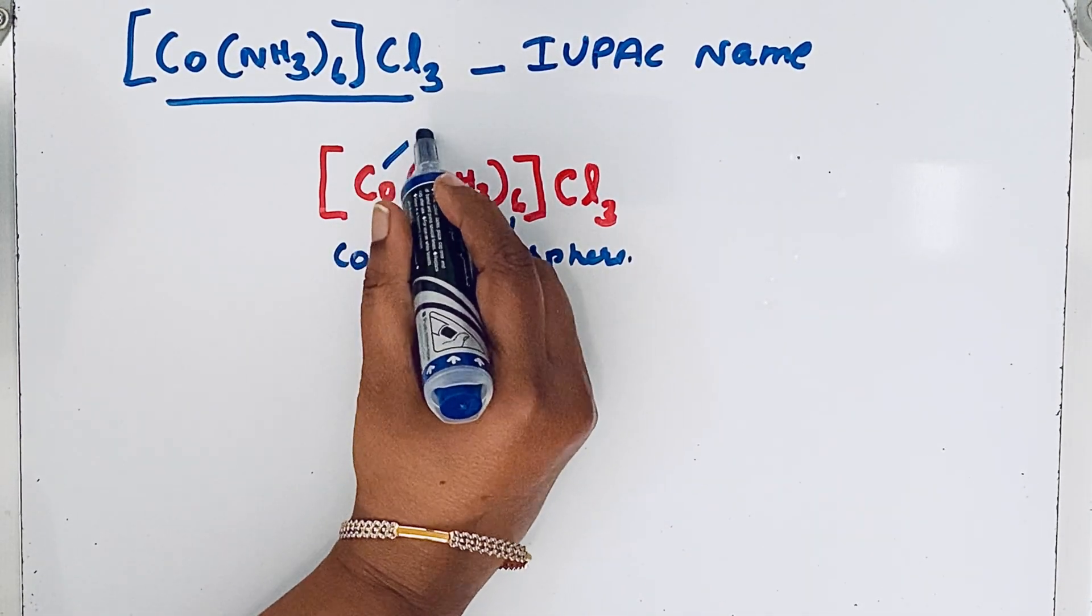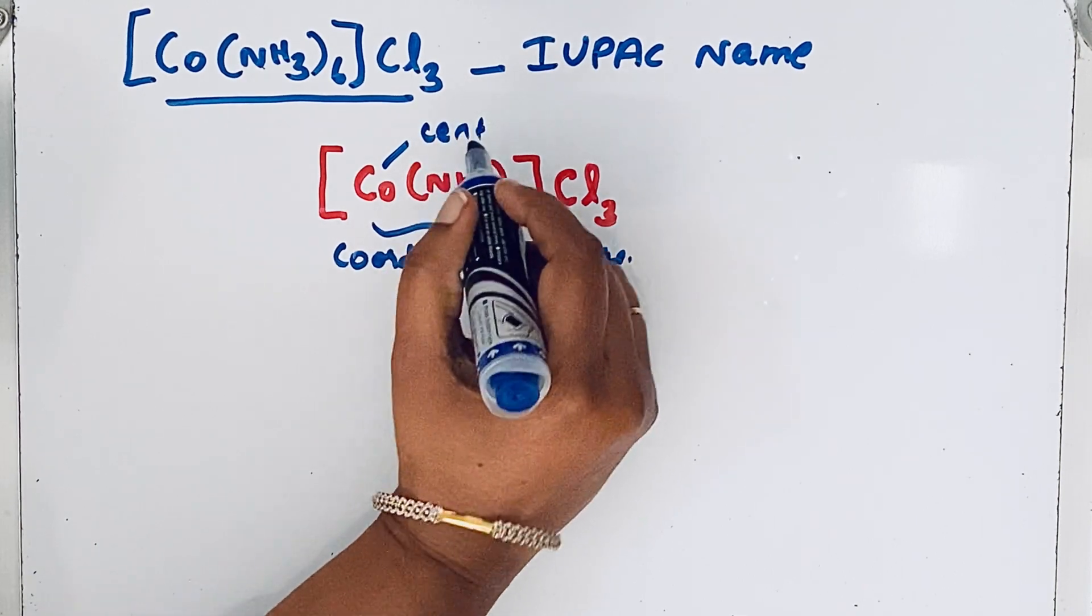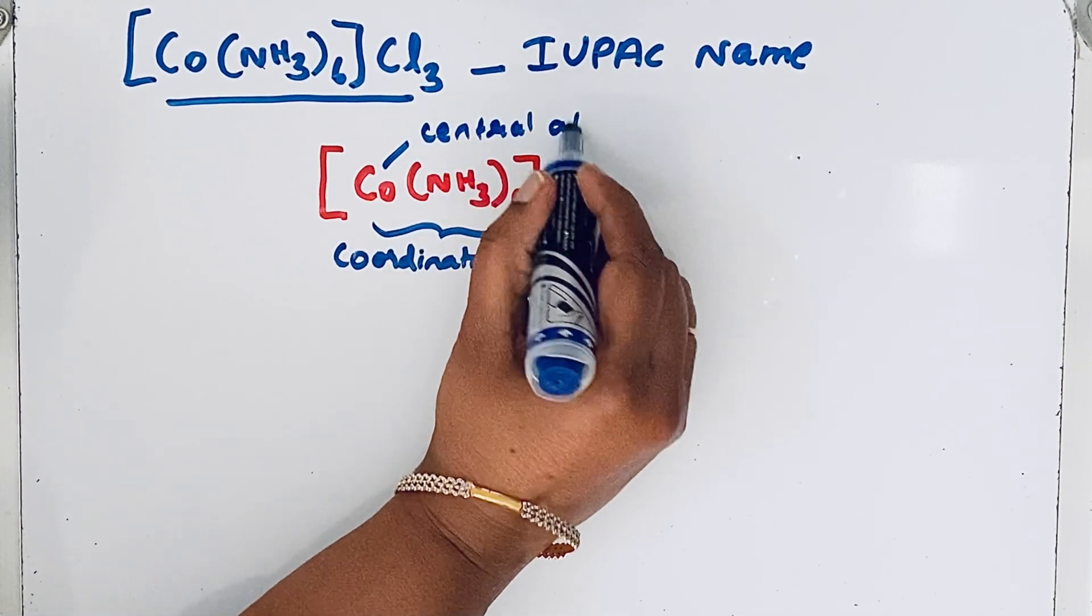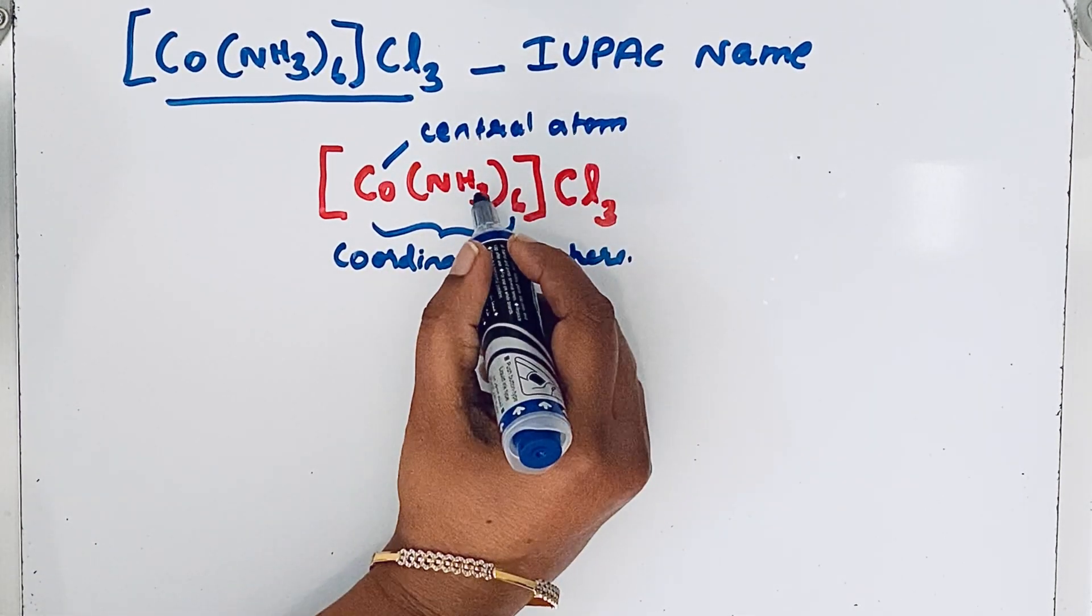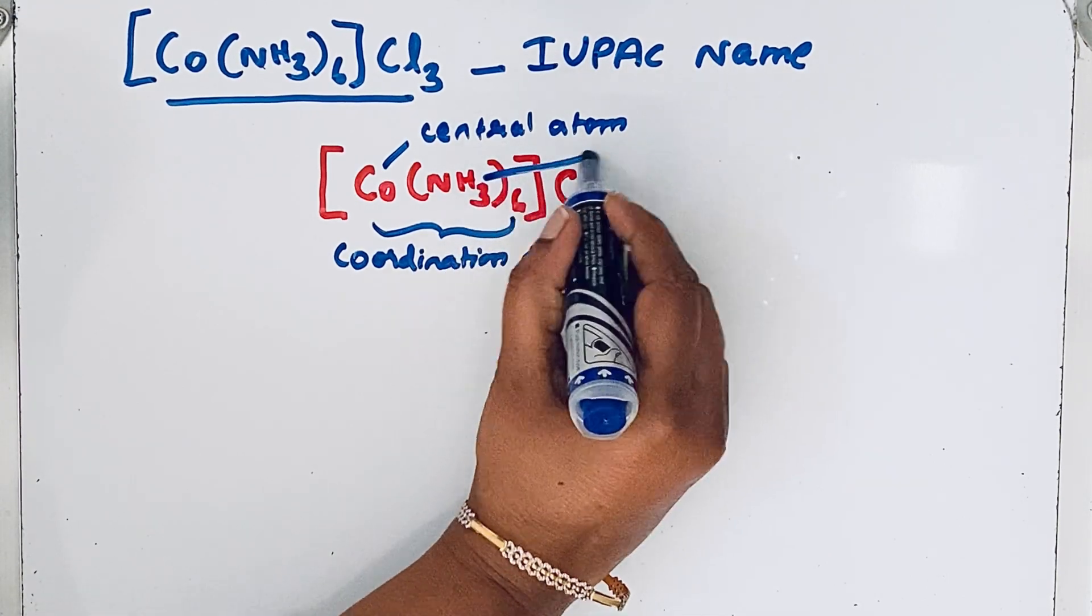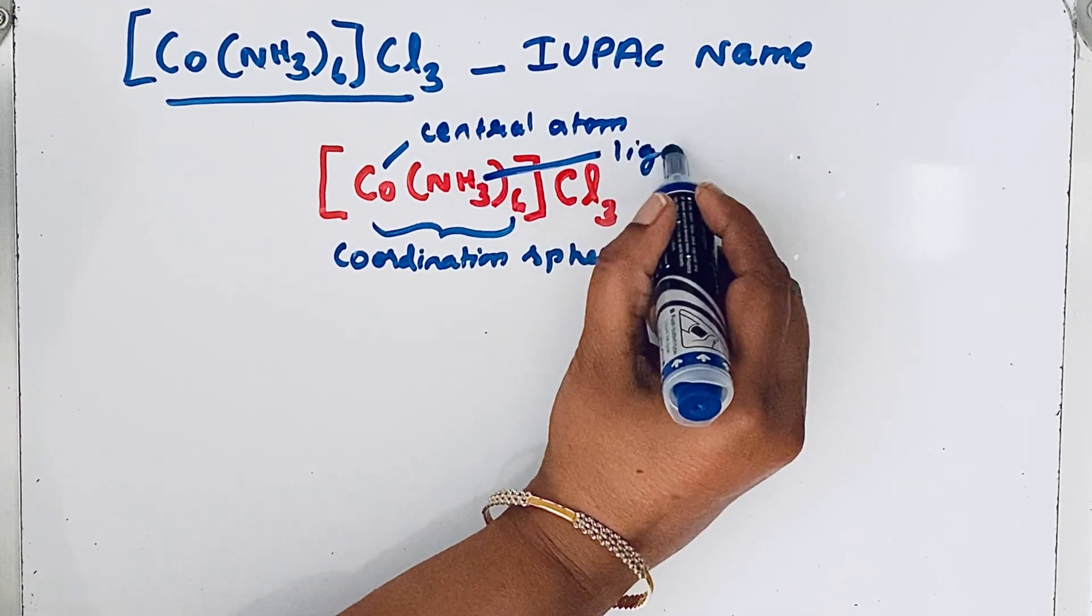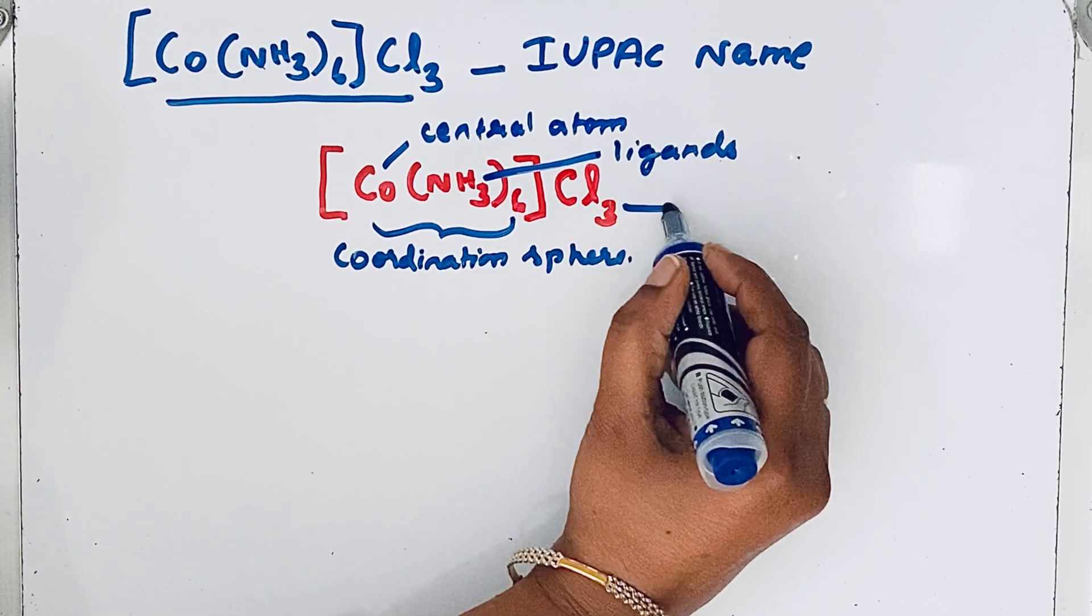This is the central atom, and here we have NH3 six times. These are ligands, and this is the counter ion.